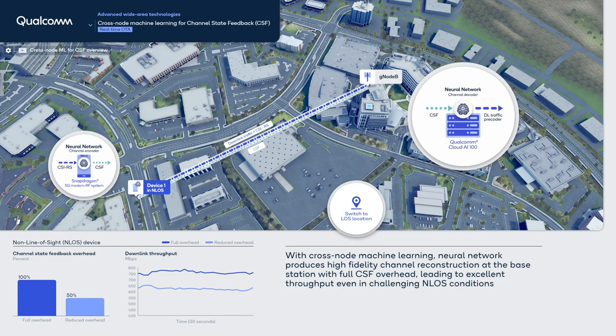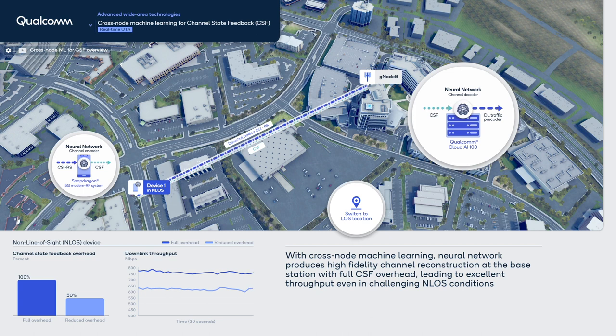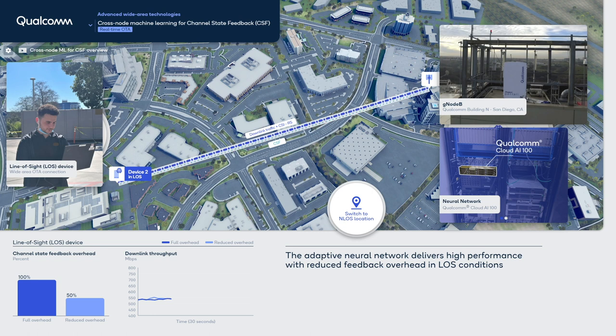In this specific implementation, the system hosts multiple neural network models customized for different channel conditions. In the first scenario, we have a device in non-line-of-sight to the gNB. We see that the neural network produces high-fidelity channel reconstruction at the base station and leads to excellent throughput. In the second scenario, we have a line-of-sight device. The adaptive neural network is shown to deliver high performance while reducing the feedback overhead.